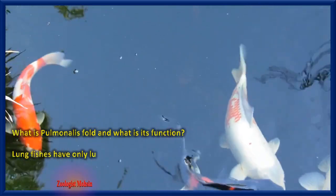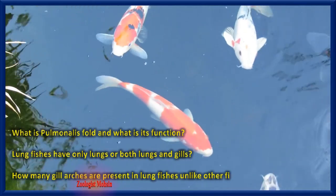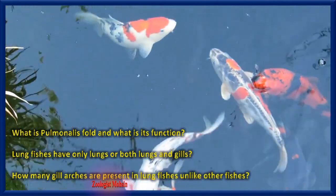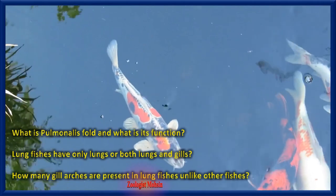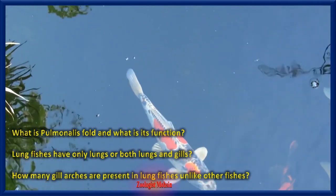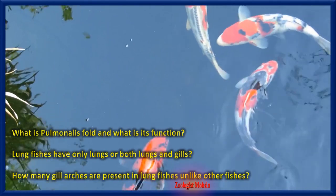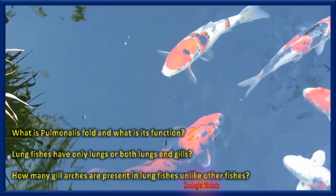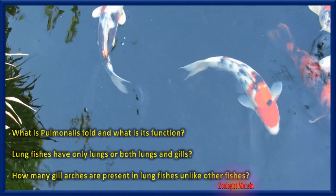Now some review questions: What is the pulmonalis fold and what is its function? Do lung fishes have only lungs or both lungs and gills? How many gill arches are present in lung fishes unlike other fishes? Please write the answers of all these questions in the comments so that your concepts may be clarified further. Thanks for staying with me.